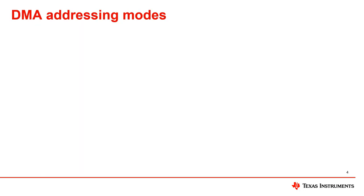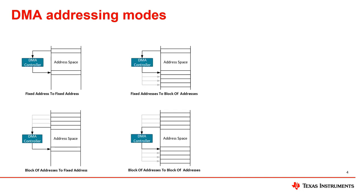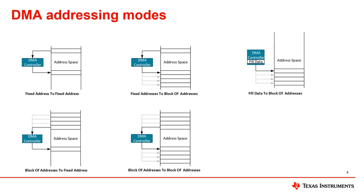Let's take a closer look at the DMA addressing modes. These four addressing modes are easy to operate, with the source and destination addresses either incremented, decremented, or unchanged after each transfer. The rest two addressing modes are extended addressing modes. In fill mode, the source address can be incremented by one more time for transferring only odd or even addresses.